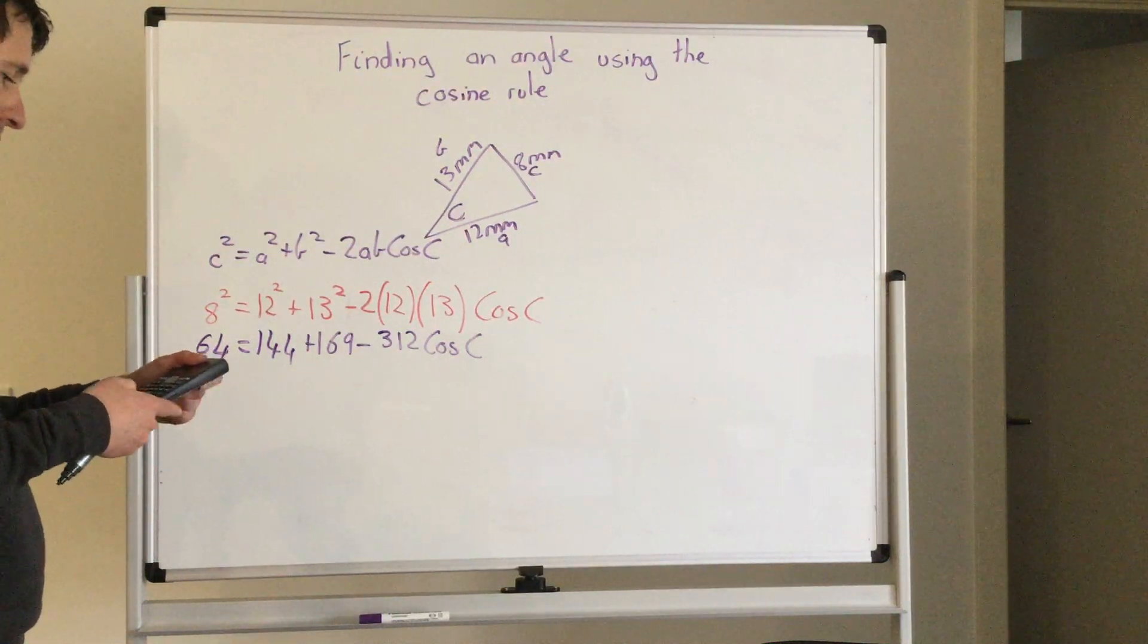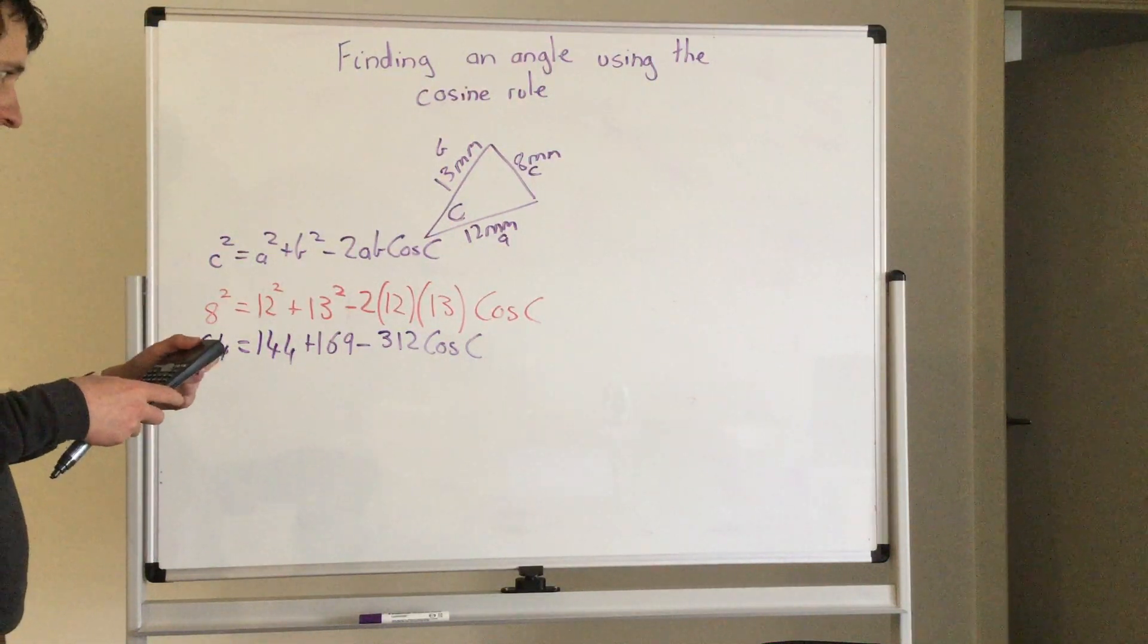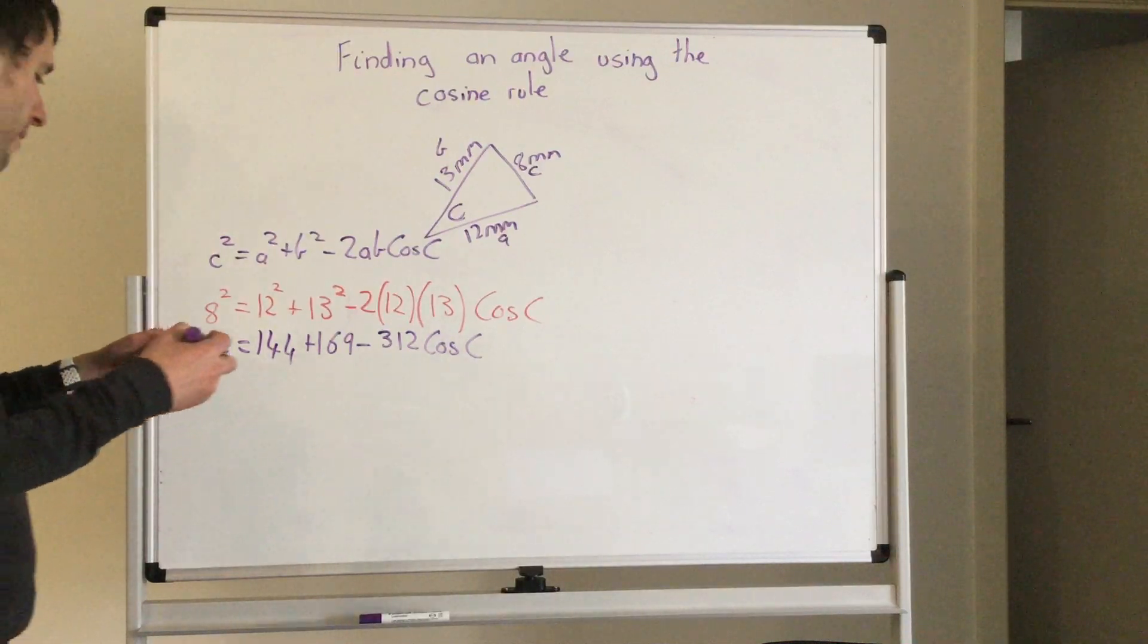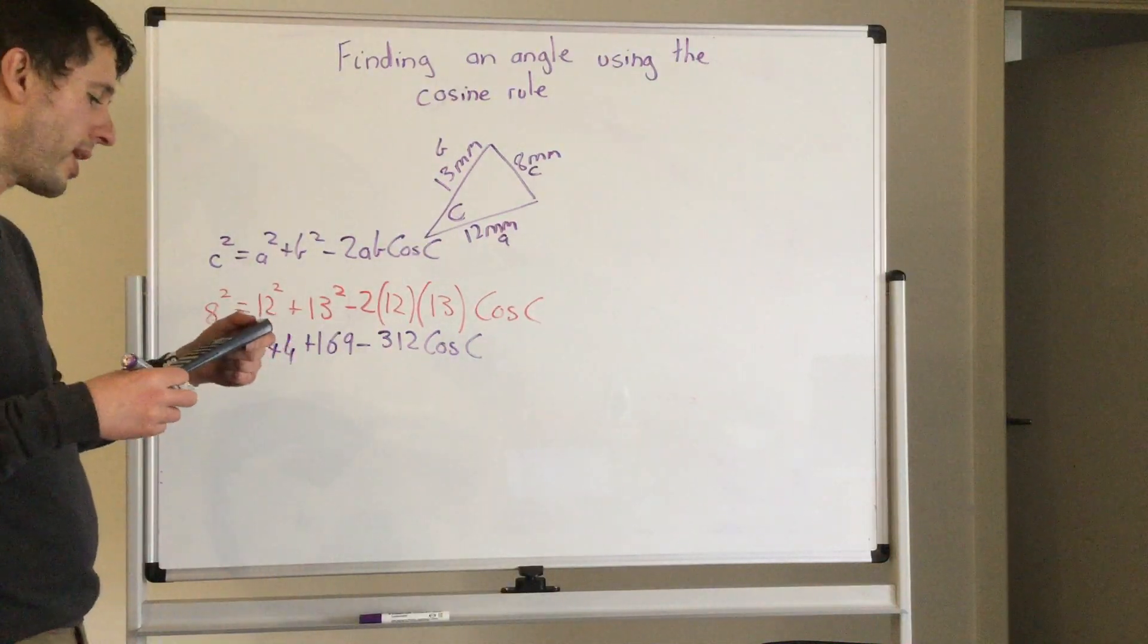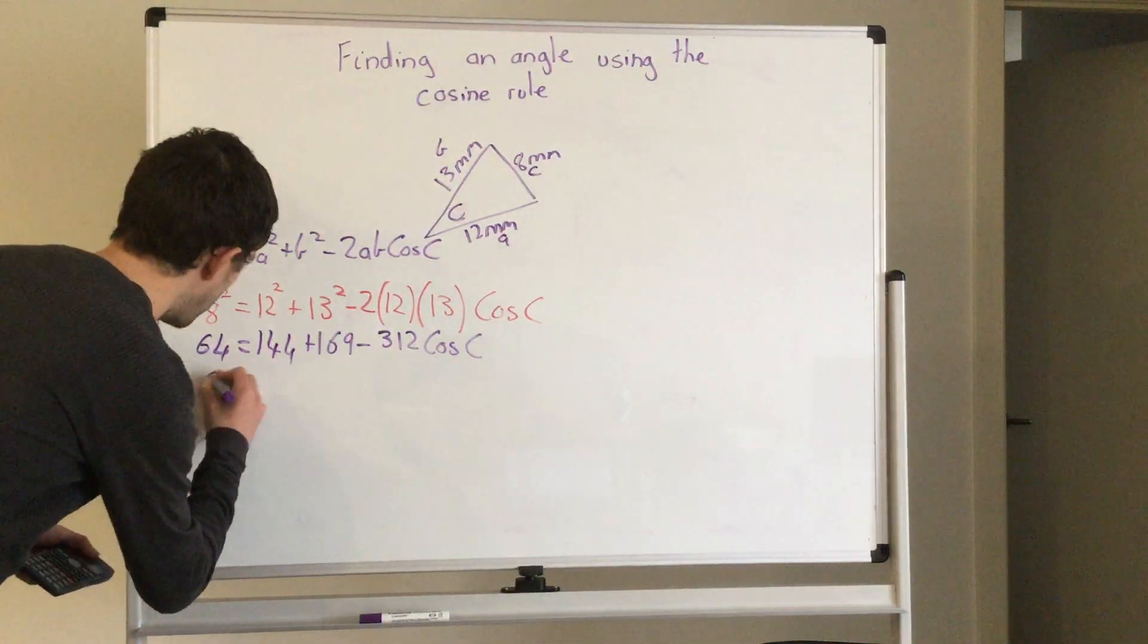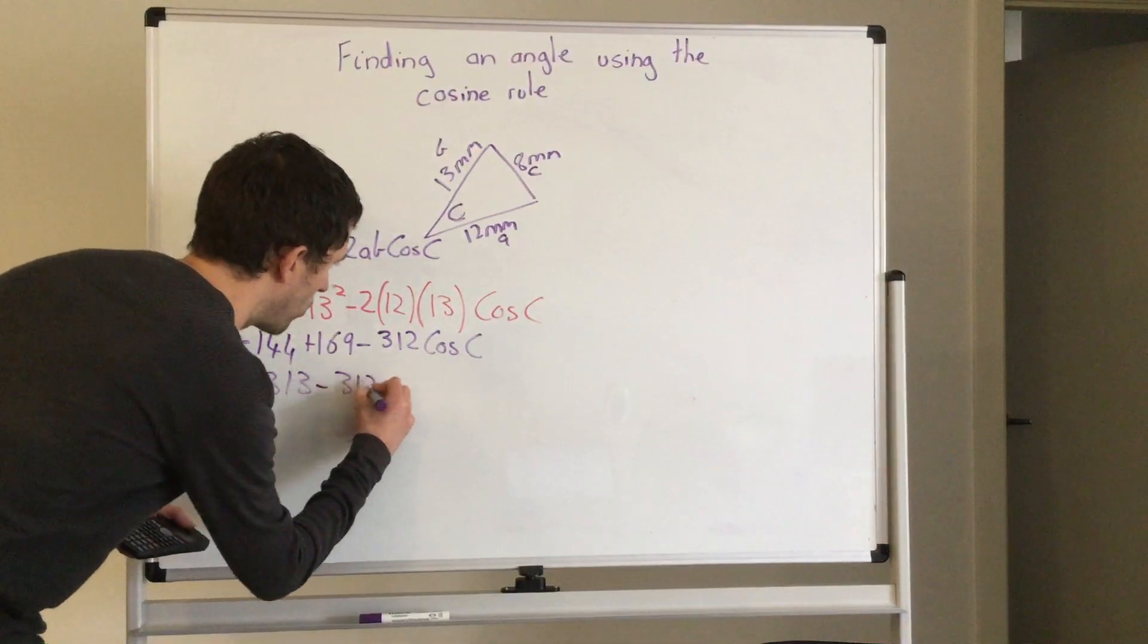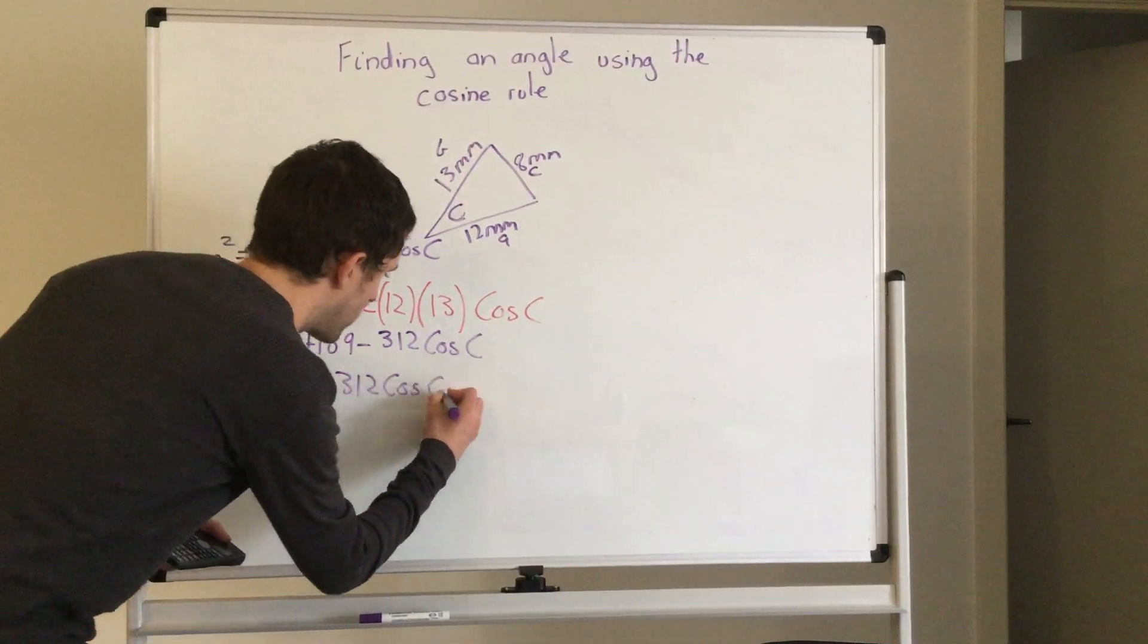So 144 plus 169 equals 313. So 64 is equal to 313 minus 312 cos c.